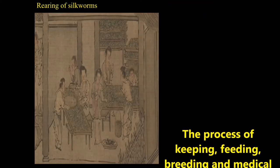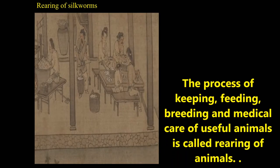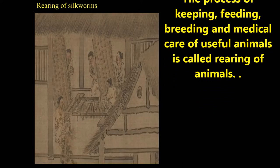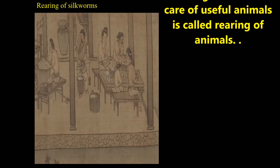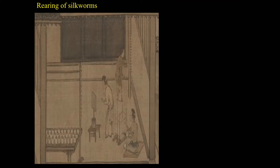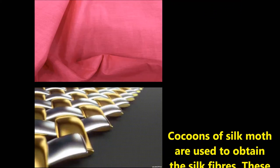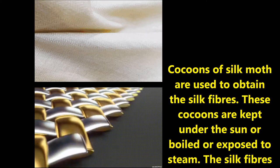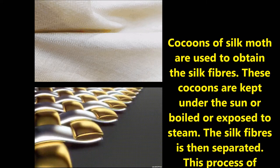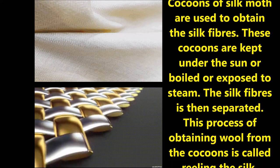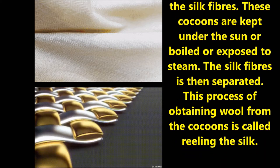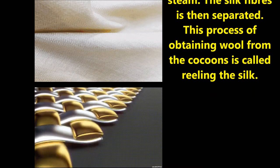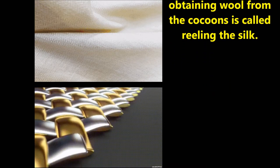The process of keeping, feeding, breeding, and taking care of useful animals is called rearing. Reeling and dyeing: Cocoons of the silk moth are used to obtain silk fibers. These cocoons are kept under the sun, boiled, or exposed to steam, and the silk fibers are then separated. The process of obtaining silk from the cocoons is called reeling the silk.